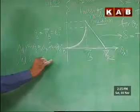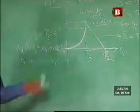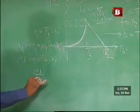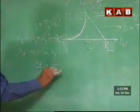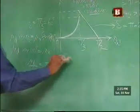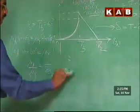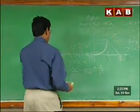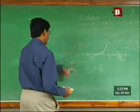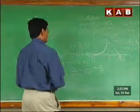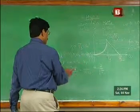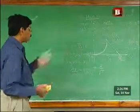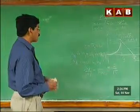Therefore, μ_denser × sin θ_c = μ_rarer × sin 90°, because at critical angle the refracted angle has to be 90 degrees. So μ_d × sin 60° = μ_r × sin 90° = μ_r × 1. Therefore, μ_d / μ_r = 1 / sin 60° = 2/√3. So the refractive index of the denser medium relative to the rarer medium is 2/√3. That is how we can calculate the relative refractive index.